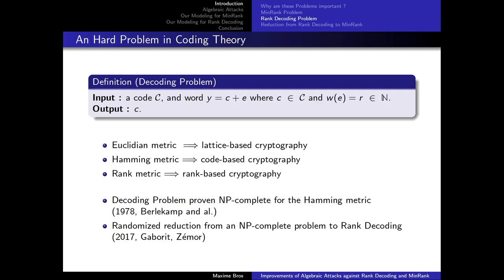Before describing the rank decoding problem, I will give a more general problem in coding theory, known as the decoding problem. The input is a code, and one receives a word Y which equals C plus E, where C is a codeword belonging to the code C plus a certain error E of small weight. The weight is equal to R, which is an integer, and the problem is to output C — that is, to recover the codeword by removing the error.